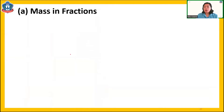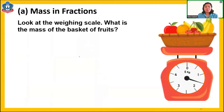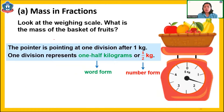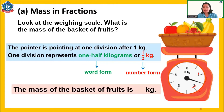I have here another example of fractions. Look at the weighing scale — what is the mass of the basket of fruits? The pointer is pointing at one division after one kilogram. This is one kilogram and this is two kilogram. One division represents one half kilogram. Remember, from one to two there are two parts. If one whole is divided into two, that one part is one half. In number form, we have one, then the fraction bar and two. So the mass of this fruit basket is one and one half kilograms.